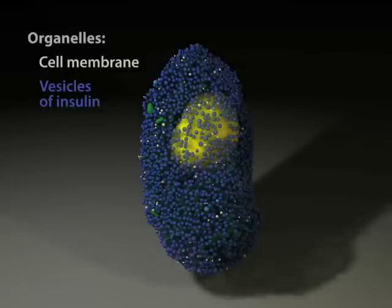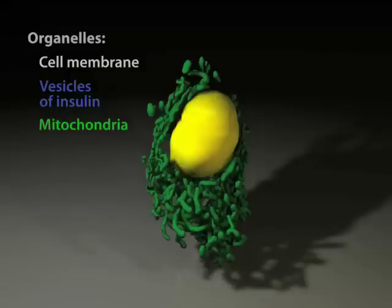Fading these blue vesicles reveals a network of mitochondria, color-coded in green, sprawled about the yellow, color-coded nucleus.